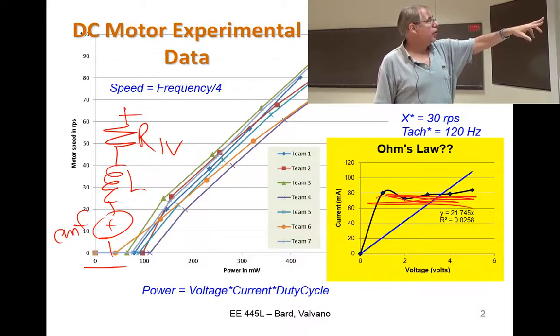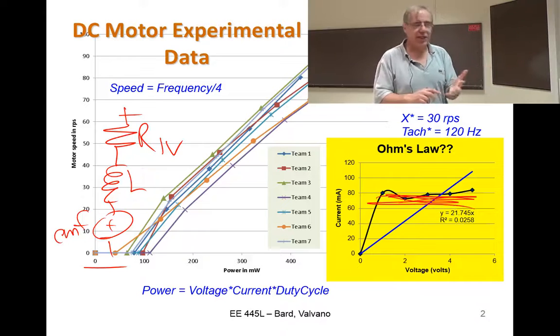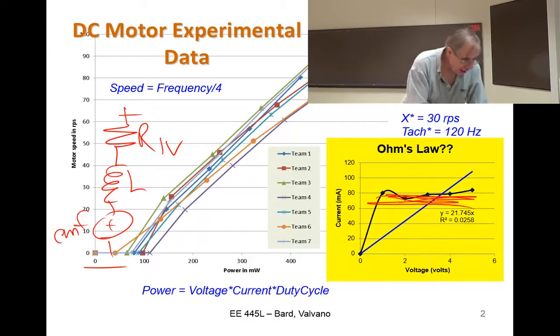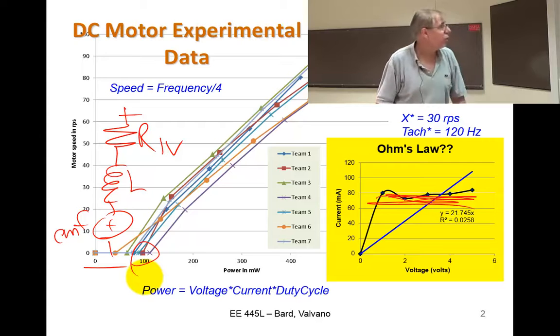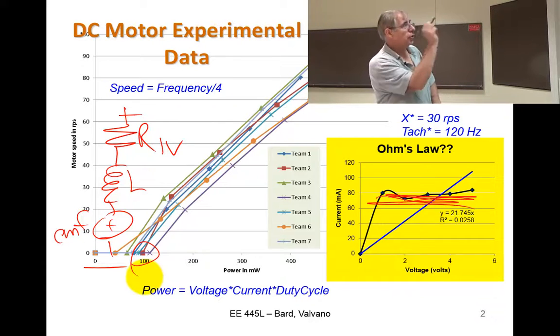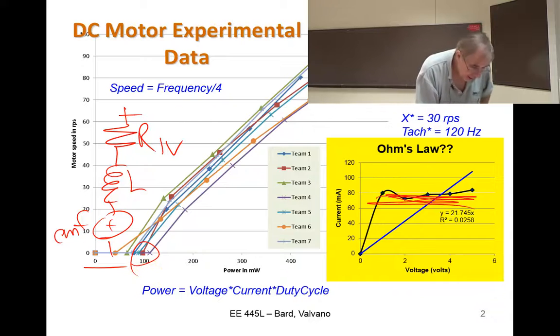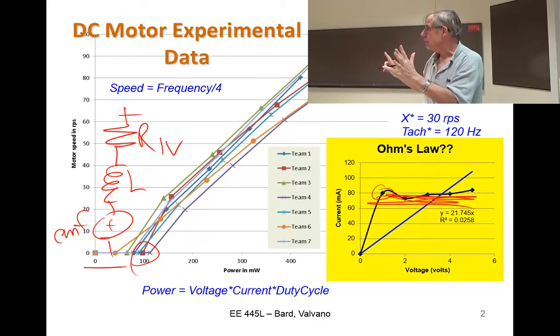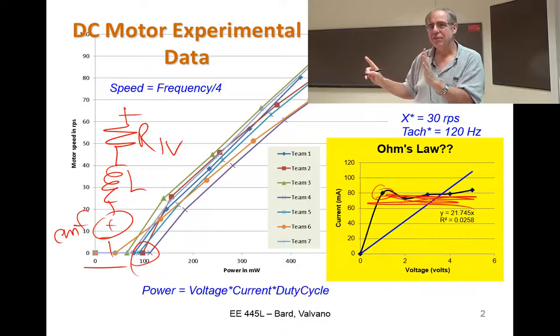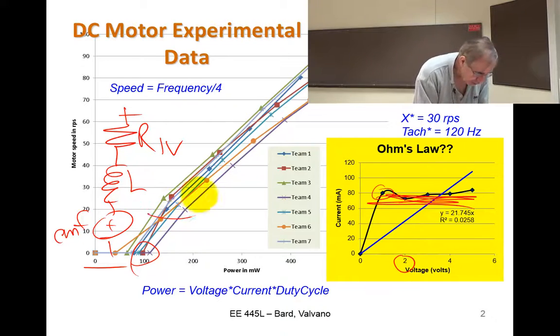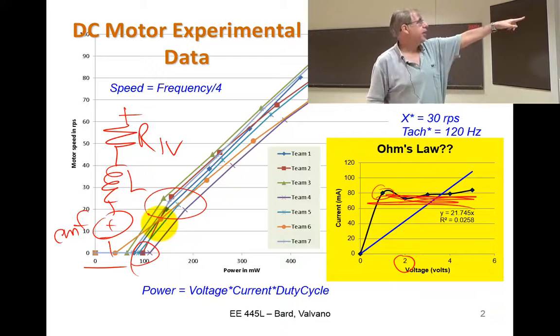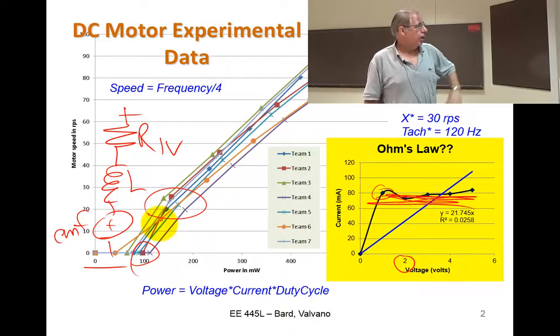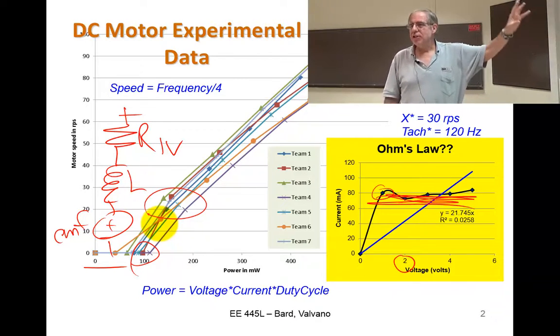And so if you plot power, which is voltage times current as a function of speed, you see right here that I dumped up to 100 milliwatts into this system. Put in one volt, had 100 milliamps, and it wasn't spinning. It wasn't moving yet. And it wasn't until we popped up to two volts that it started spinning up here at about 25 rps. So this is our first notice that it's nonlinear.